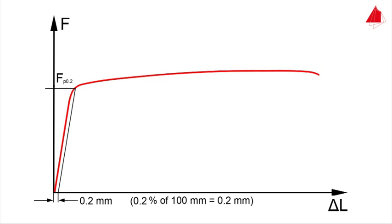This is the force that causes a plastic strain of 0.2 percent. The 0.2 percent proof strength Rp0.2 is equal to Fp0.2 divided by the original cross-sectional area S0.